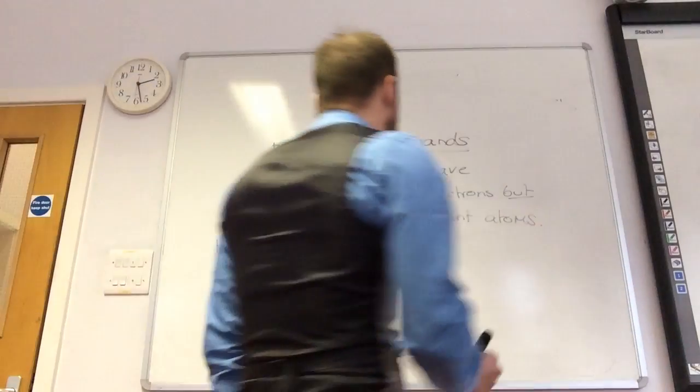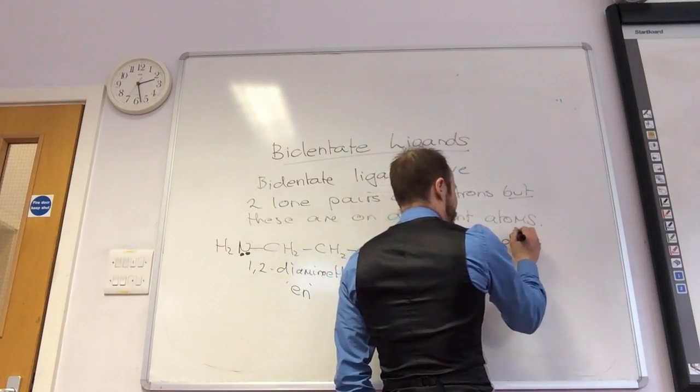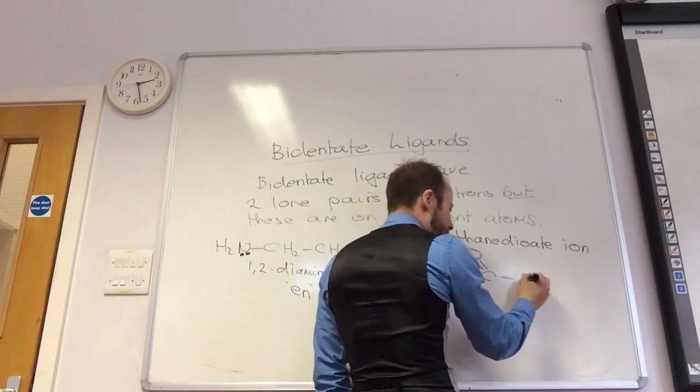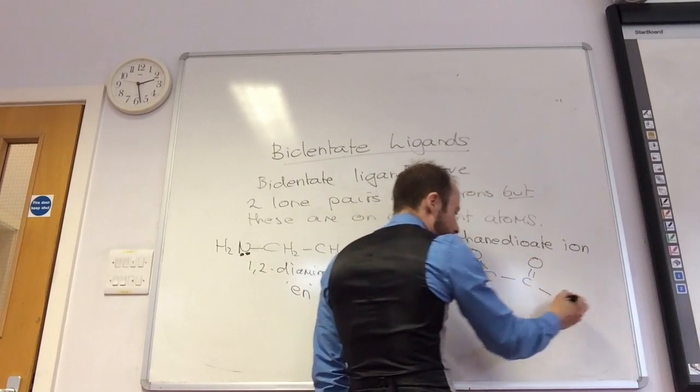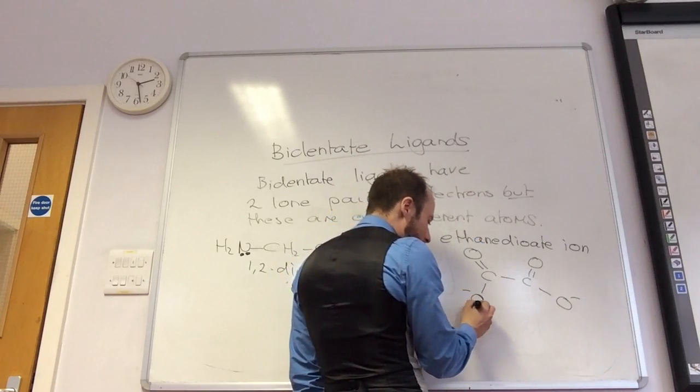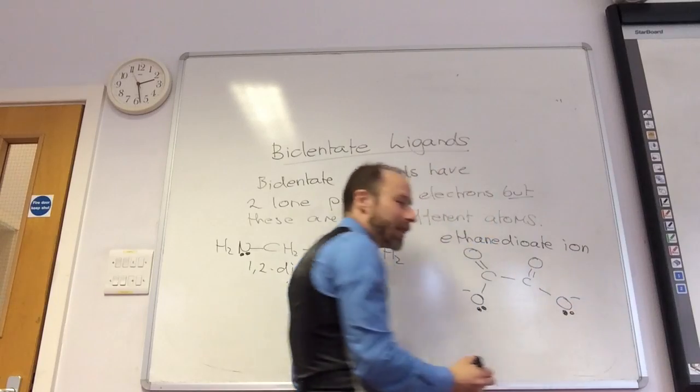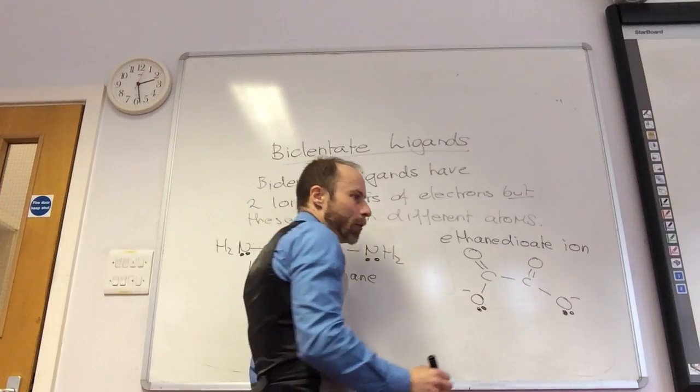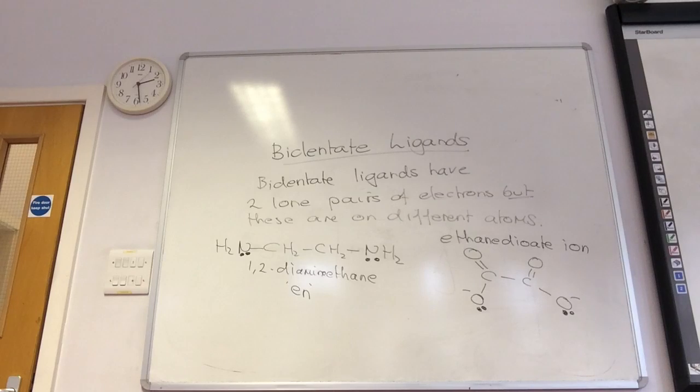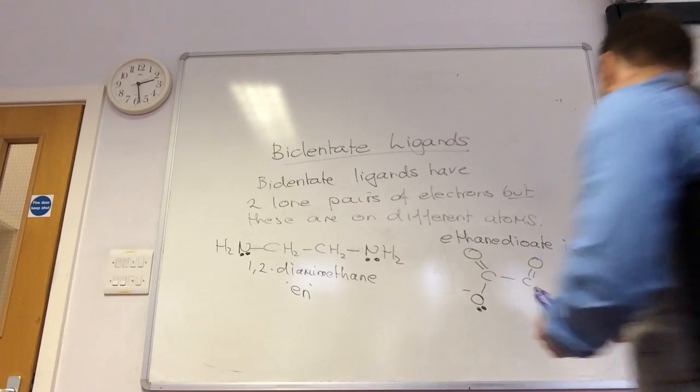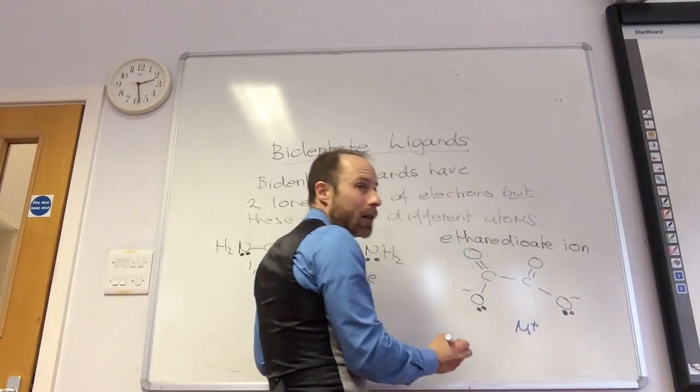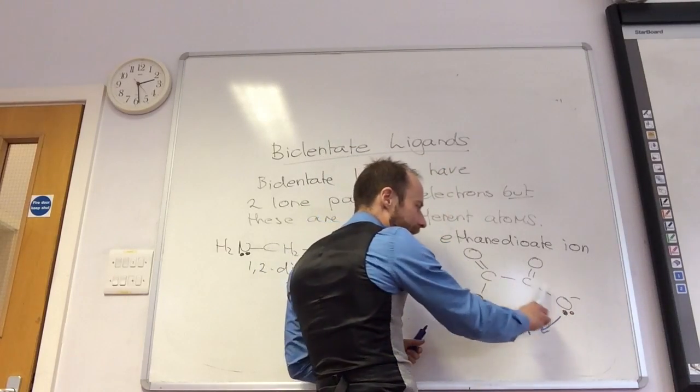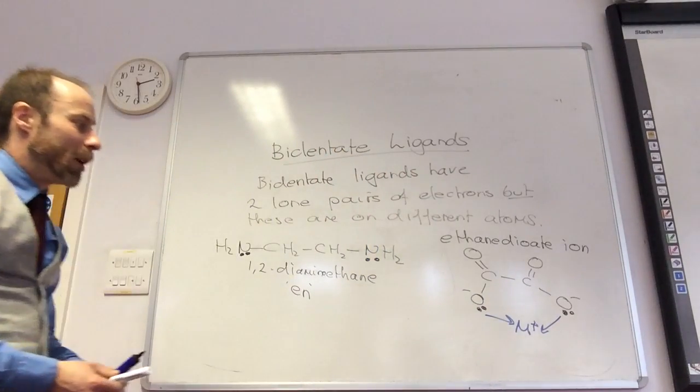The other one is the ethane dioate ion. So this is an ion. We start with a dicarboxylic acid, but we've removed the hydrogens. So on each of these oxygens, it's a lone pair of electrons that it can donate. So if I was forming a complex ion with these guys, my metal plus would be here. That lone pair would be donated. That lone pair would be donated. And can you see now, I've got my circle. Which is why it's so stable.